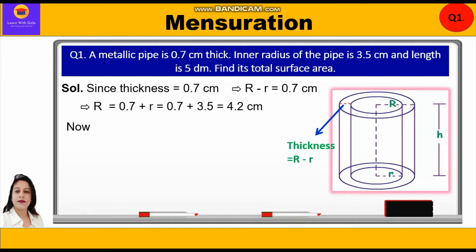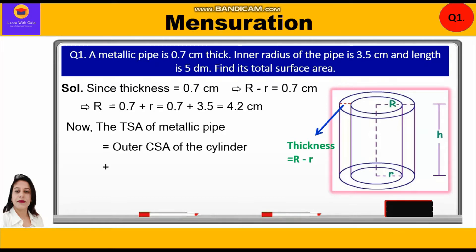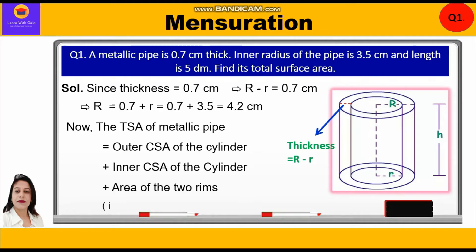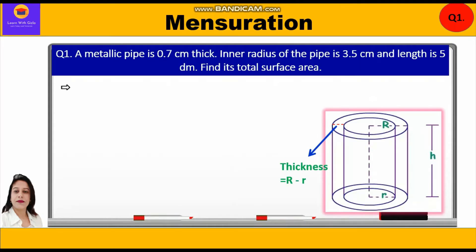The total surface area of the metallic pipe equals outer curved surface area plus inner curved surface area plus area of the two rings, which is outer area minus inner area. So total surface area = 2πRh + 2πrh + 2π(R² − r²).